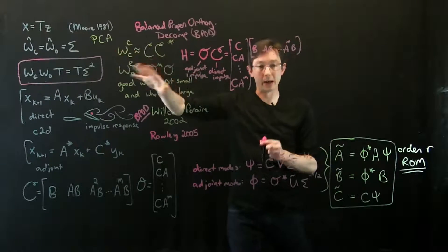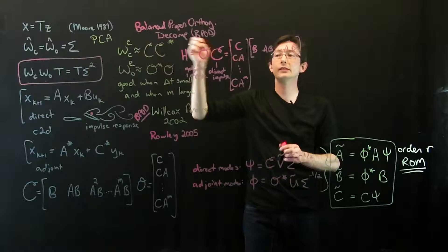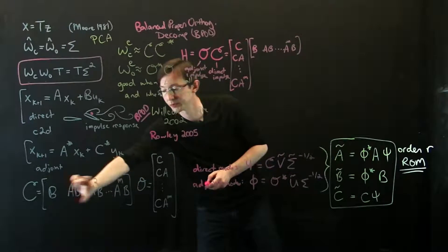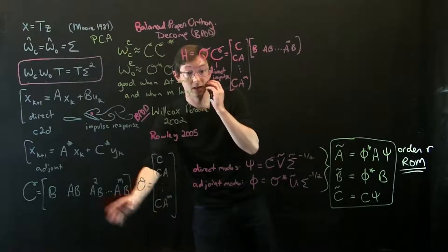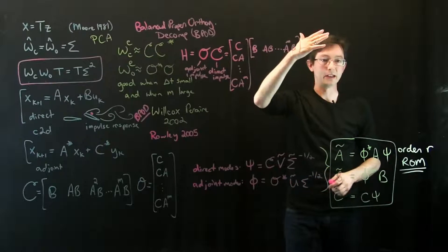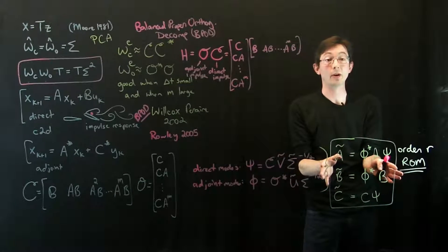We talked about how you can get rank r approximations of these Gramians or you could bypass Gramians altogether and just work on these impulse response snapshot matrices, curly C and curly O here. So you build this big Henkel matrix, you SVD it, you do some math and you get a model.